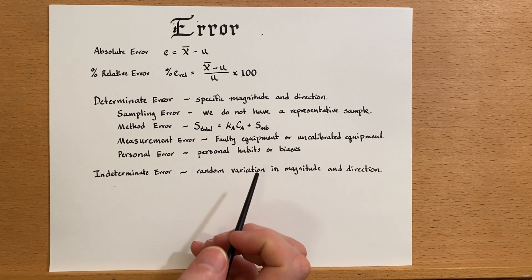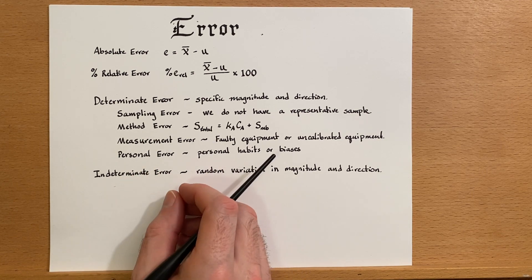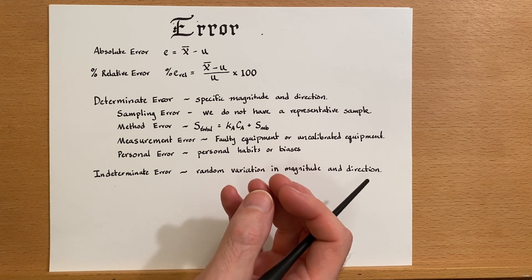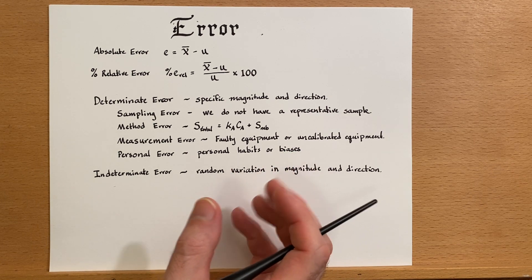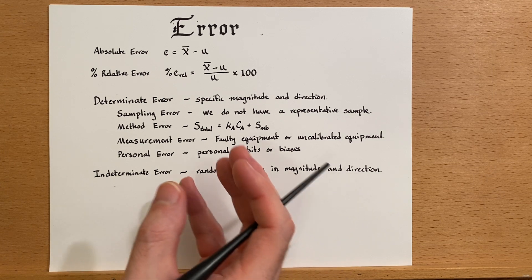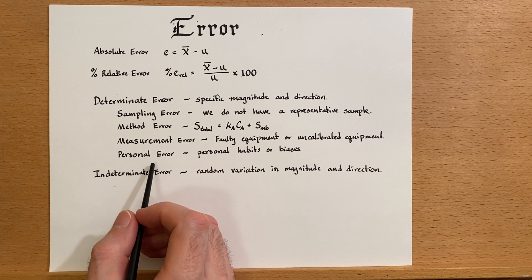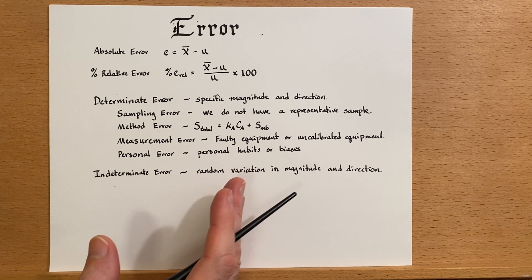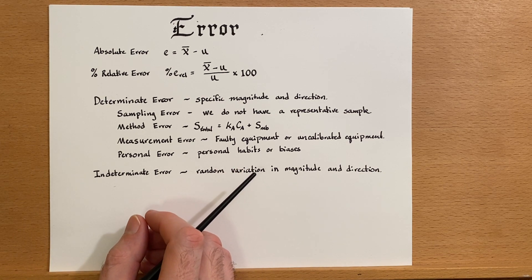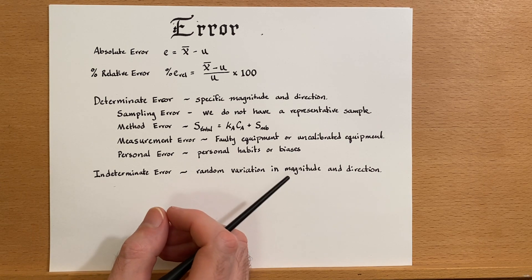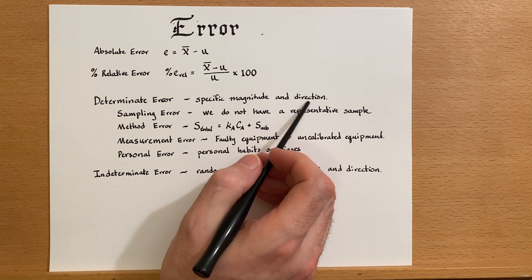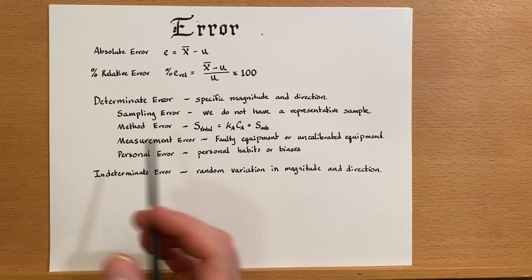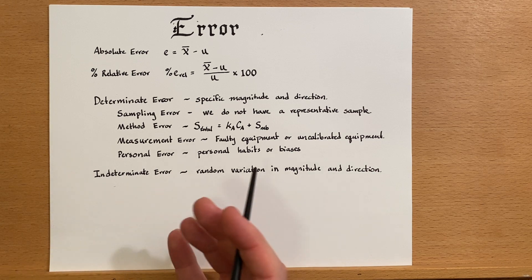Some ways that a method error could creep in would be, for example, we're doing a gravimetric analysis. We precipitated the sample and then we dry it, but maybe we don't dry it so that all of the water has gone. Well, this would be a problem with the method error, and it could be a determinant error as long as we did the method exactly the same each time. It would have perhaps a slight amount of variation in it, but it would always be in the same direction, which is important for it to become determinant error. This is something that could be corrected by simply drying it for longer as an example.